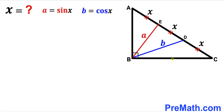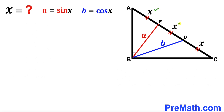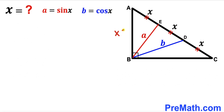Welcome to pre-math. In this video we have got a right triangle ABC along with segments BD and BE. All segments AE, ED, and CD are equal in length, represented by x. Segment BE is represented by a, where a equals sine of x, and segment BD is represented by b, where b equals cosine of x. Our task is to find the value of x.